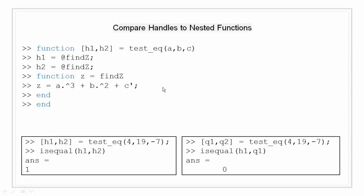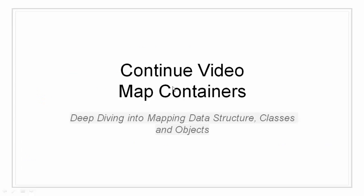There are two cases in comparison of handles for nested functions. Consider the example shown here. There are two handles h1 and h2 that both handle the function findz. In case 1, if both the handles are being constructed using the same function call, then they are considered to be equal by MATLAB. Here we have called only one time and we are using both h1 and h2 for comparison. In case 2, if the handles belong to a different call statement, where h1 belongs to one call statement and q1 belongs to second call statement, MATLAB will not consider them to be equal. This concludes our video on function handles.